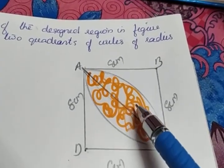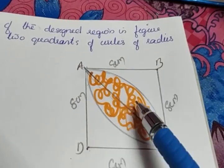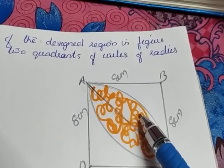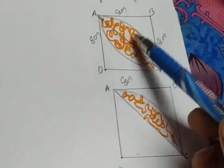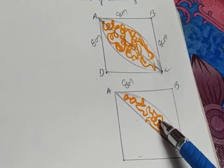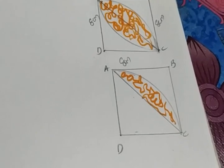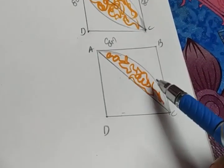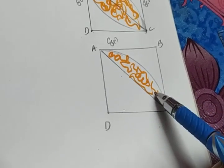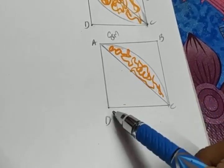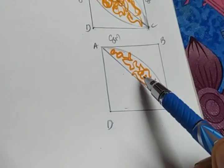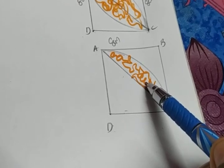We are going to find the area of one part; multiplying by two will give the full designed region. I have drawn the upper part portion separately — this is the half of the designed region. The shaded region itself is a segment, because DC is the radius, DA is the radius, and triangle ADC is a right triangle. The shaded region is actually a segment.